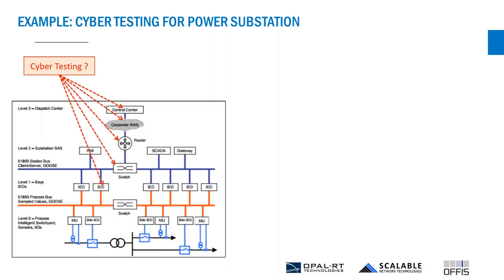The IEDs communicate with level two — the communication level at the subsystem. The IEDs provide data measurements to the user interface and monitoring systems like SCADA, and may also push data out towards the remote control center.